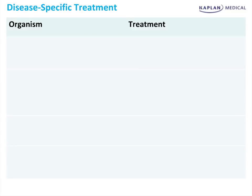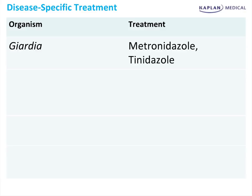For disease-specific therapy not covered by quinolones — such as Giardia — use metronidazole or tinidazole. This is why you need to know the diagnostic test: empiric ciprofloxacin won't cover Giardia. For Giardia diagnosis, use the ova and parasite exam or stool ELISA antigen — one stool ELISA antigen is better than three ova and parasite exams.